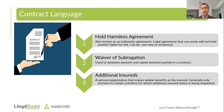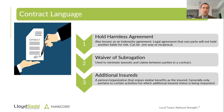A hold harmless agreement, also known as an indemnity agreement, is a legal agreement that one party will not hold another liable for risk. These can be one-way or they can be reciprocal — a lot of people have seen a hold harmless agreement signed both ways, for instance between the GC and the subcontractor and vice versa. Basically, on a project, if something happens, you can hold one of those other parties liable for that risk.